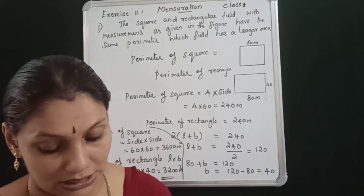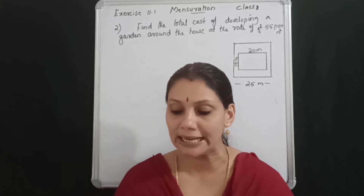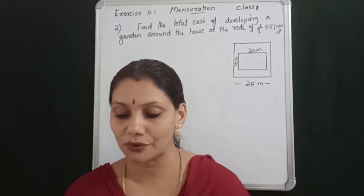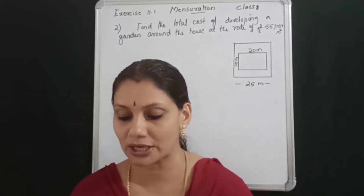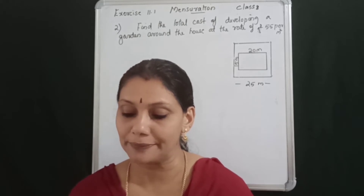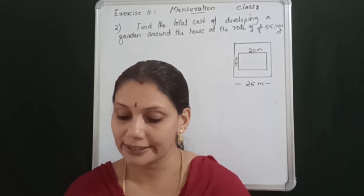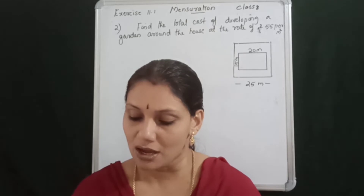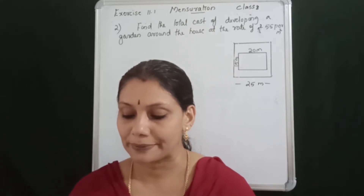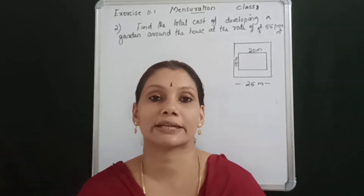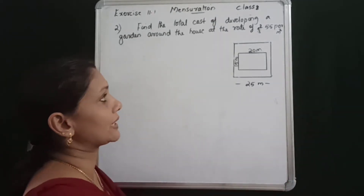Question 2. Mrs. Kaushik has a square plot with the measurement as shown in the figure. She wants to construct a house in the middle of the plot. A garden is developed around the house. Find the total cost of developing the garden at the rate of rupees 55 per meter square.